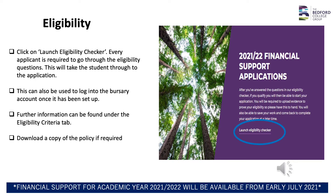To start your application for any of the bursaries, scroll down the financial support page and click on the Launch Eligibility Checker tab. Every applicant is required to go through the eligibility questions. This will take you through to the student page for applications, which can also be used to log into your bursary account once it has been set up. Further information can be found under the eligibility criteria tab.